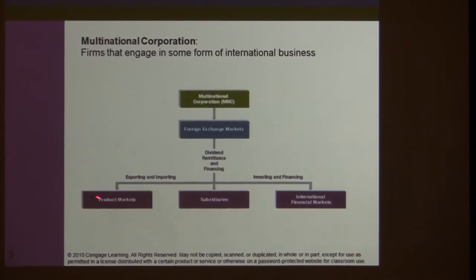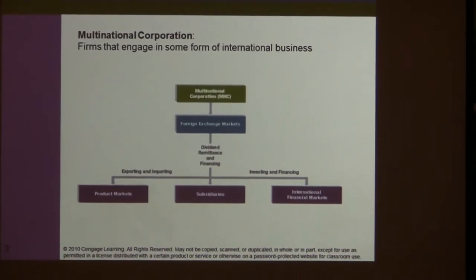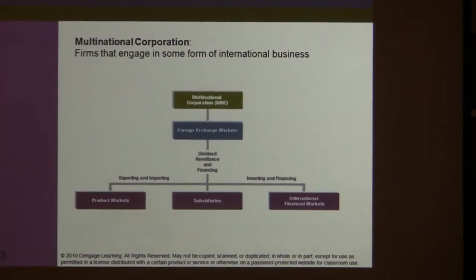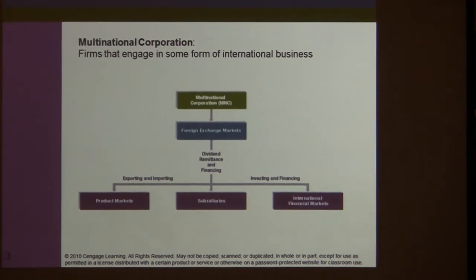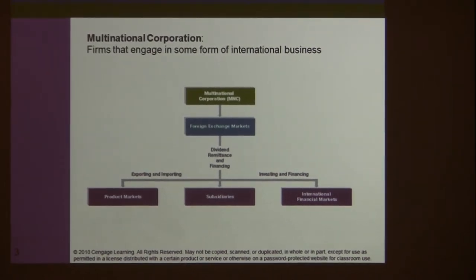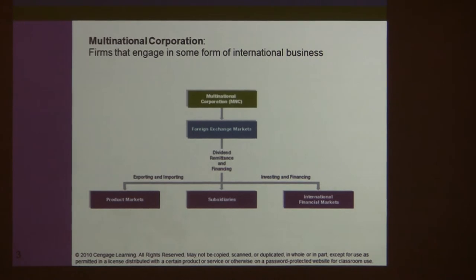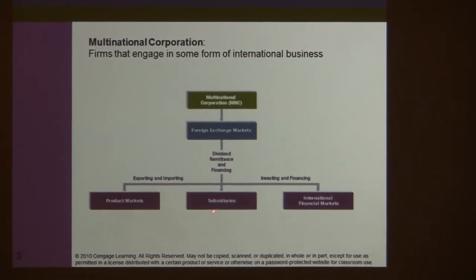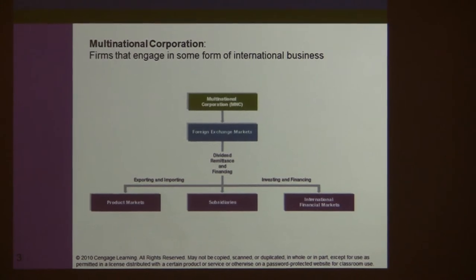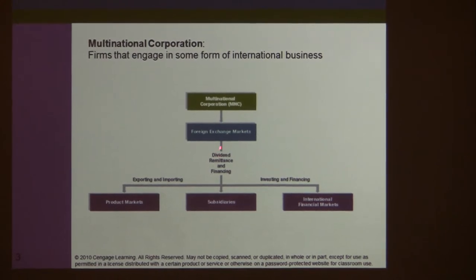Multinationals may also have subsidiaries in other countries. Most U.S. software companies such as Microsoft, Oracle, and Google have subsidiaries in India. GM has subsidiaries in China to manufacture cars. Mercedes-Benz, BMW, and Audi have manufacturing facilities in the U.S. When they have subsidiaries, they must worry about financing and converting profits back to the parent company through the foreign exchange market.